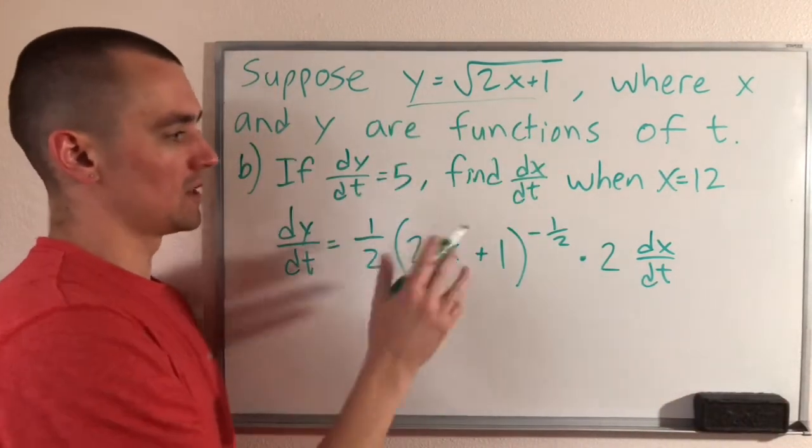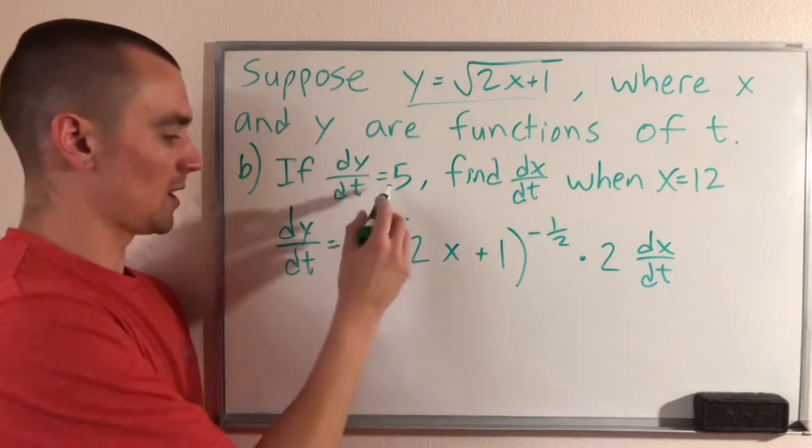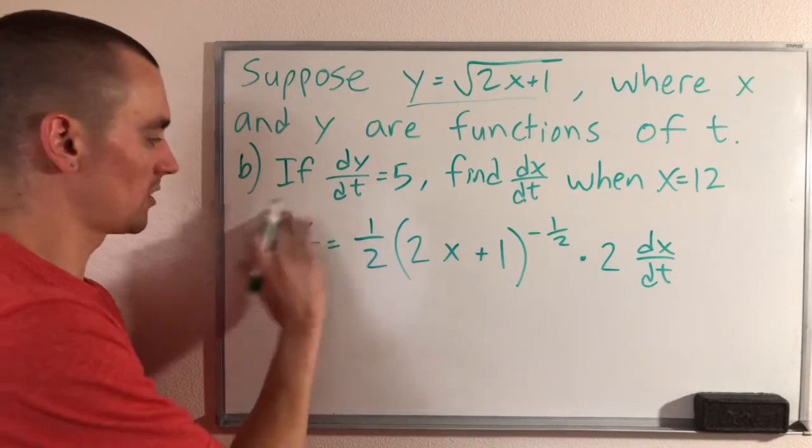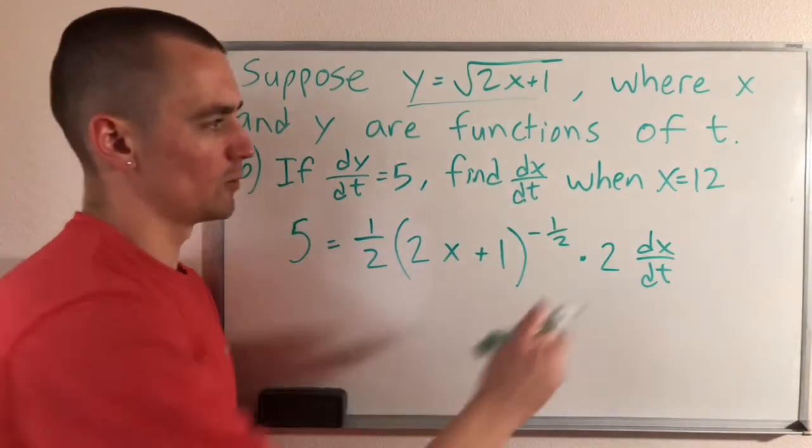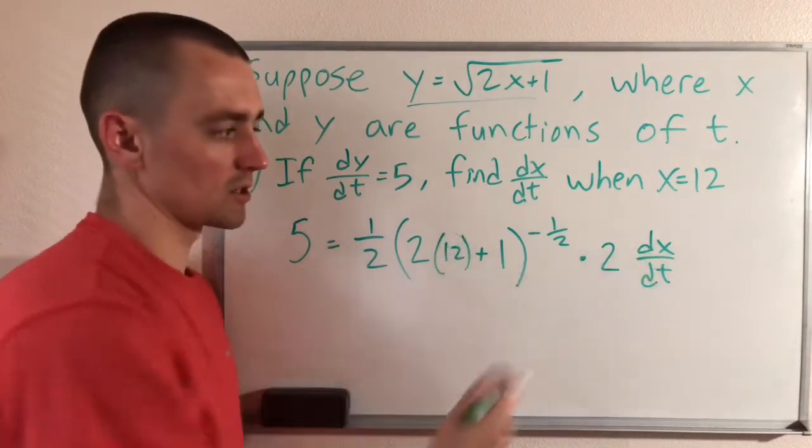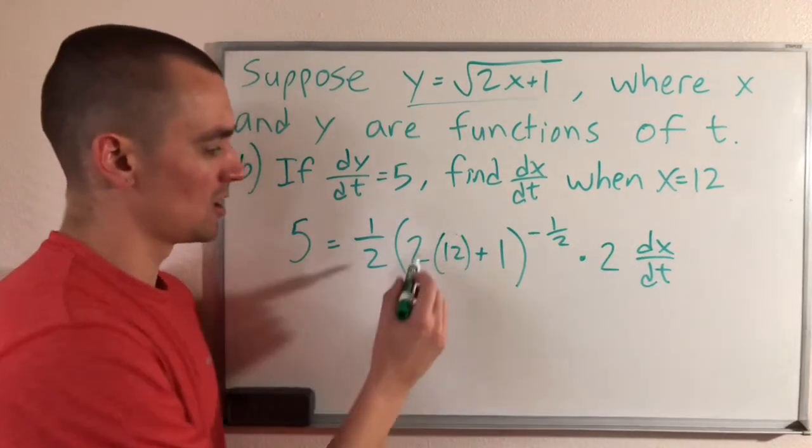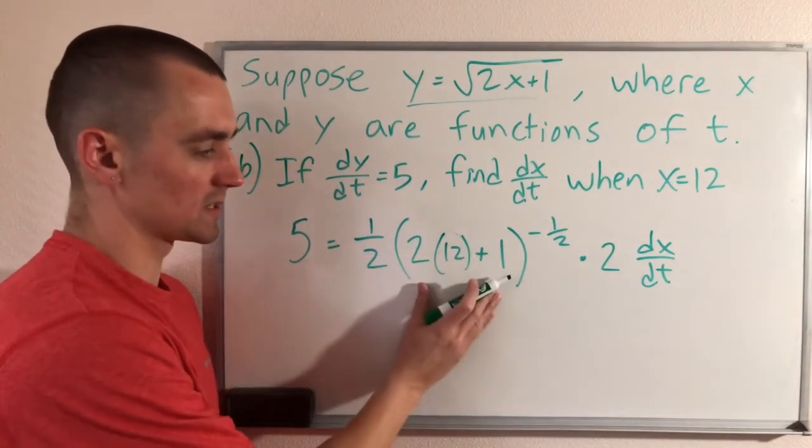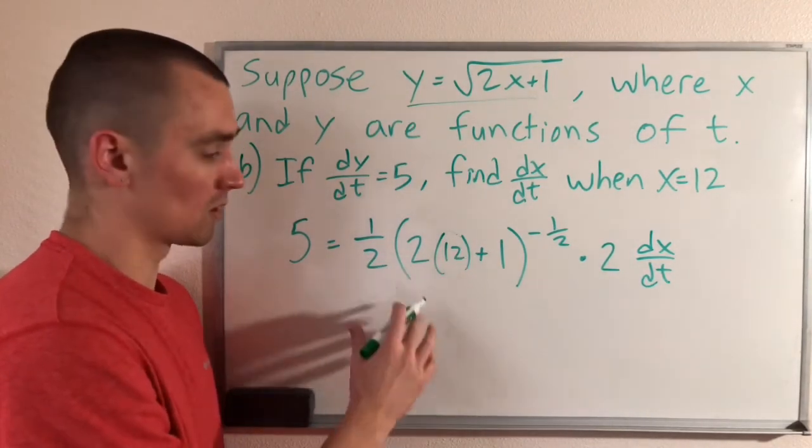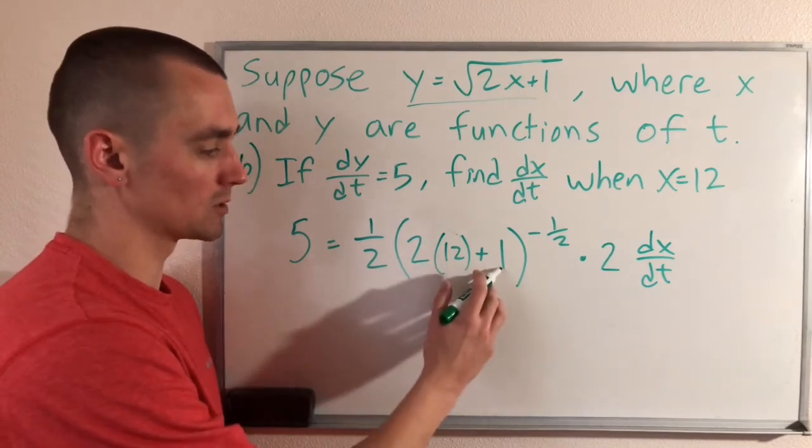Now what we need to do is just plug in the information we know, and then we're trying to find dx/dt. So first of all, dy/dt is 5, so we're going to have a 5 right here. And then we know x is 12, so we can put a 12 for x. And then we're trying to solve for dx/dt. So let's simplify all this and solve it. First of all, inside our parentheses, just based on order of operations, we're going to have 2 times 12, which is 24, plus 1 is 25.